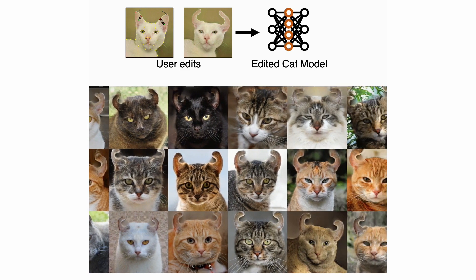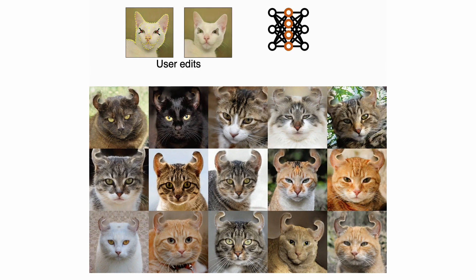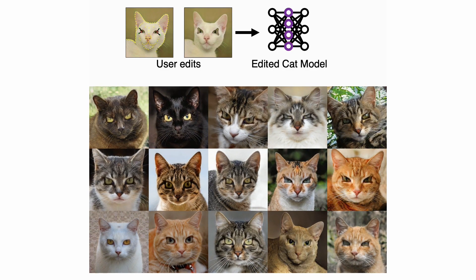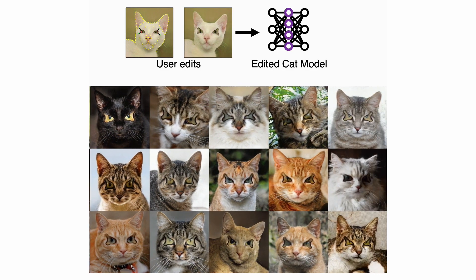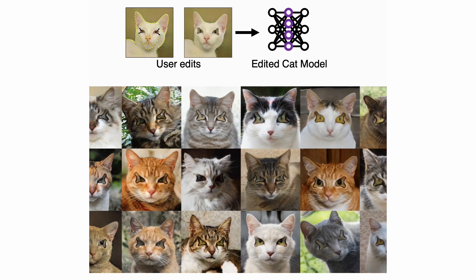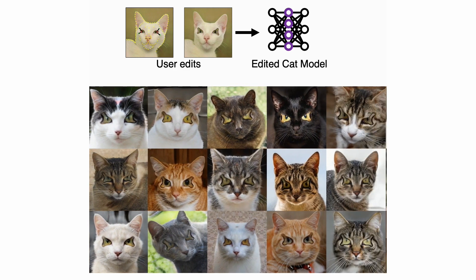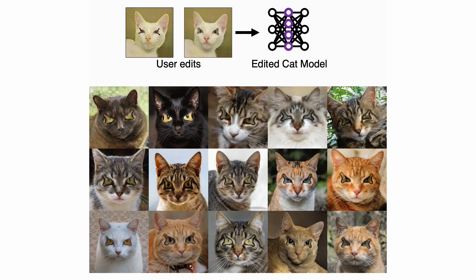And we can invent an alien cat species with a new shape of eyes like this. Since the warps change the geometry of the model itself, once we know how to create a few alien eye shapes, the model automatically generates as many alien creatures as we want.